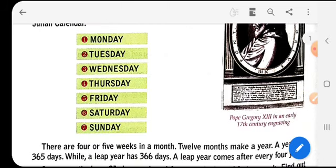Now here are the days that we come across that is Monday, Tuesday, Wednesday, Thursday, Friday, Saturday and the seventh day is Sunday.